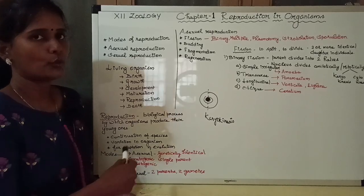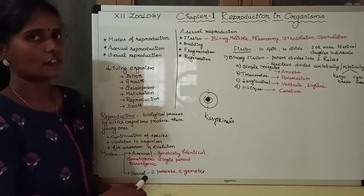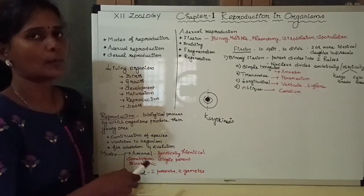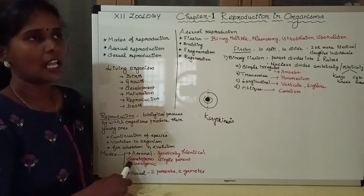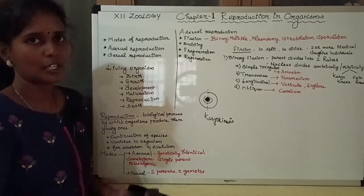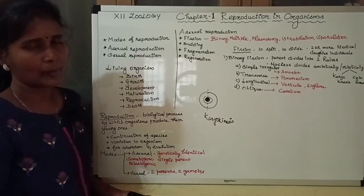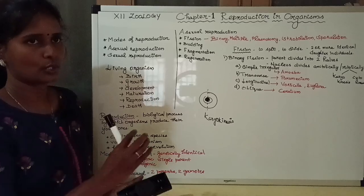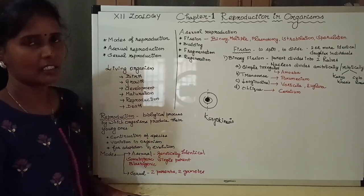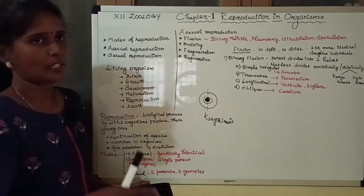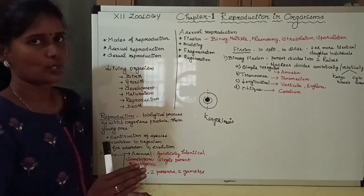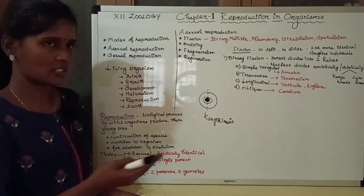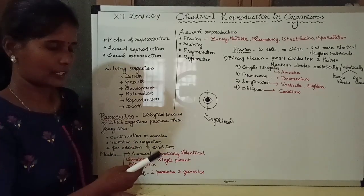There are two methods of division. One cell division is called mitosis. Mitosis is divided by spindle fiber formation, followed by cytokinesis. Mitosis is already known to us.